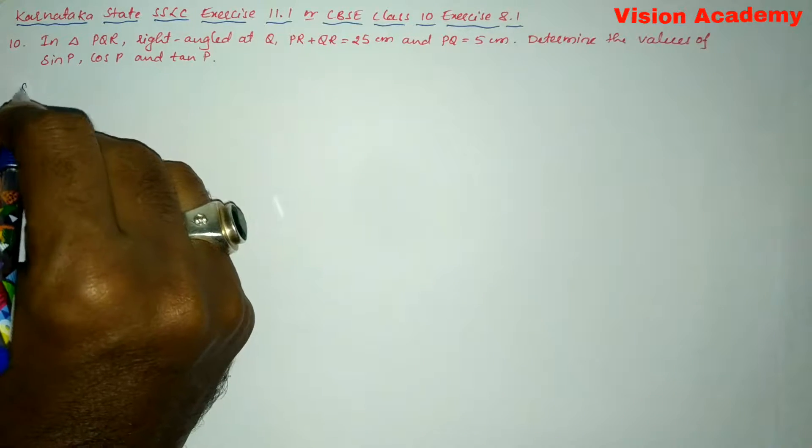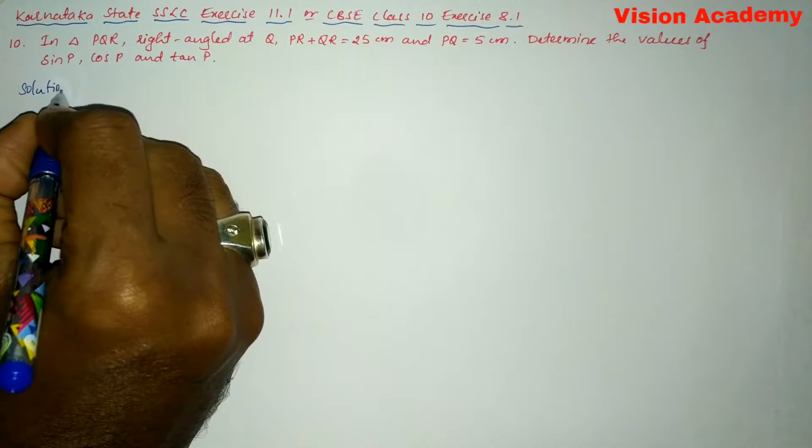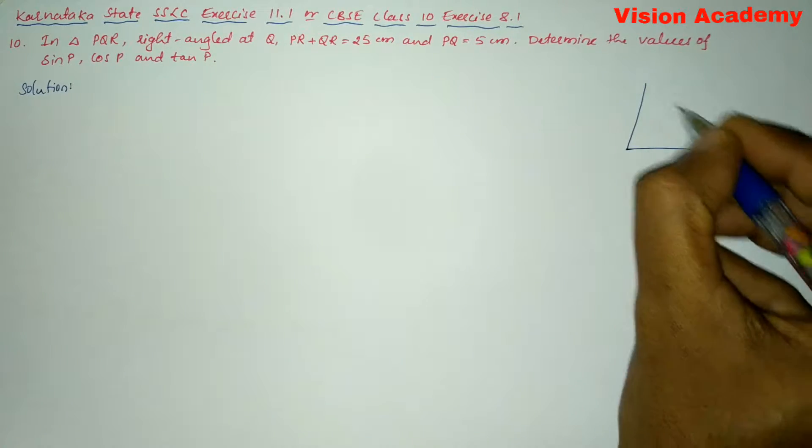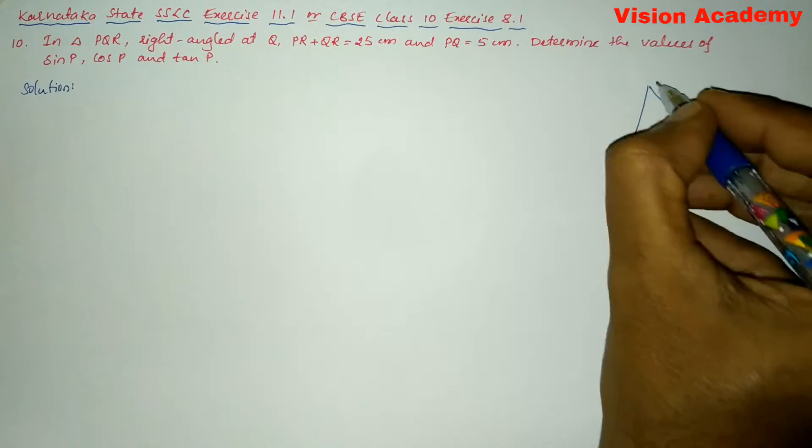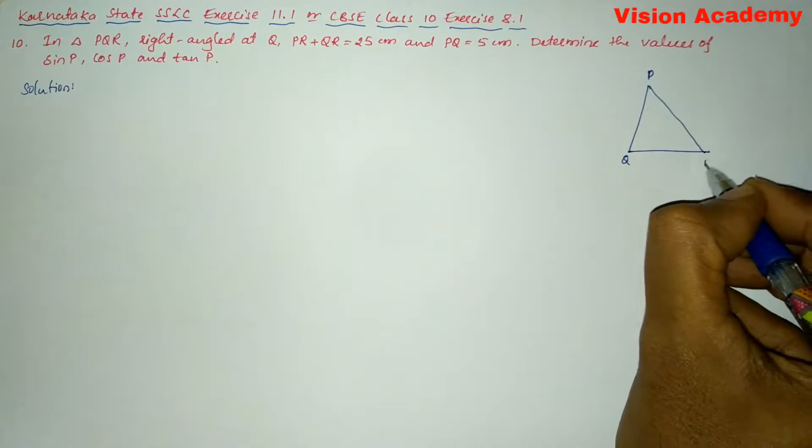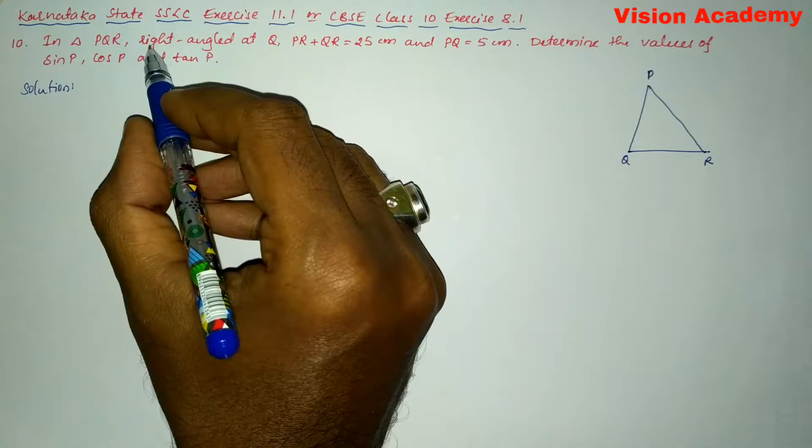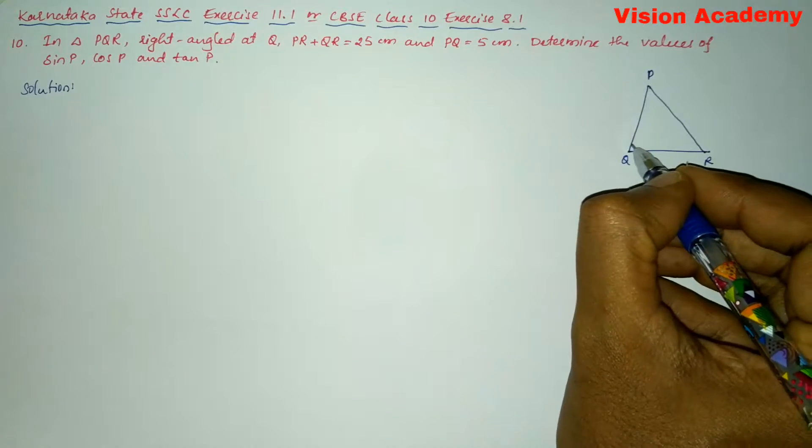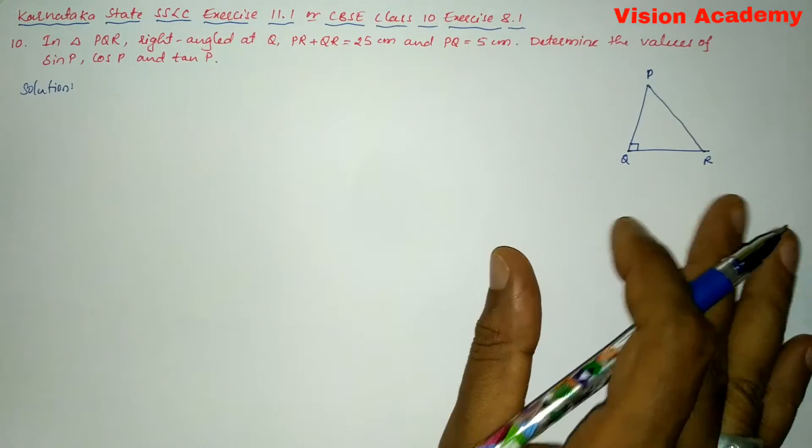So let us find the solution for the given problem. Here we will write first the right angled triangle P, Q and R. Here in the question they are given right angled at Q. So this is the right angle.